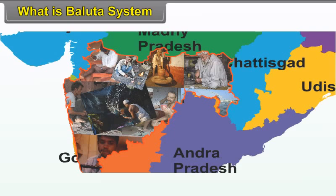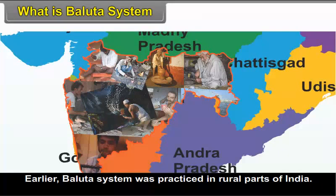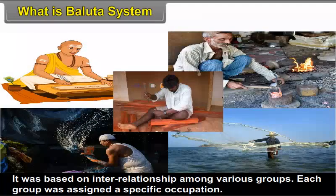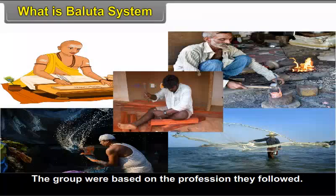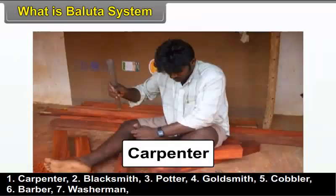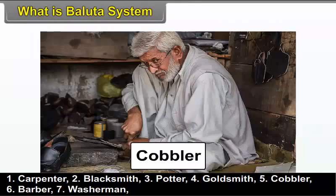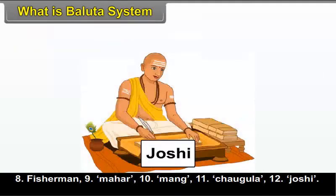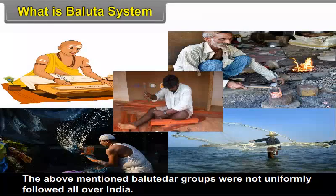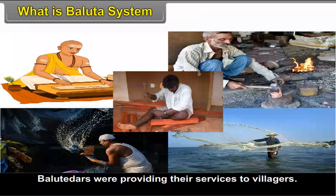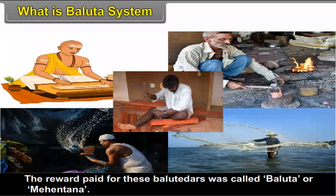3.4 What is the Baluta system? Earlier, the Baluta system was practiced in rural parts of India. It was based on interrelationship among various groups, and each group was assigned a specific occupation. The Baluta system consisted of 12 Balutedars like Carpenter, Blacksmith, Potter, Goldsmith, Cobbler, Barber, Washerman, Fisherman, Mahar, Mang, Chaugula and Joshi. These groups were not uniformly followed all over India; certain groups were included and some excluded in various parts of the country. Balutedars provided services to villagers, and the reward paid for these services was called Baluta or Mehentana.